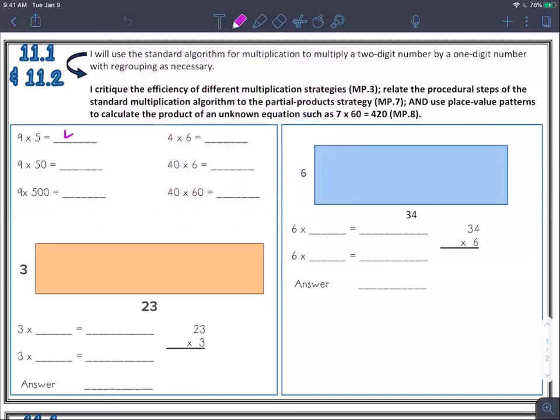Nine times five we know is 45. So then nine times 50 is the same as nine times five tens, which would be 450. Nine times 500 is the same as nine times five hundreds if you're thinking about base 10 blocks. So you would have 4500.